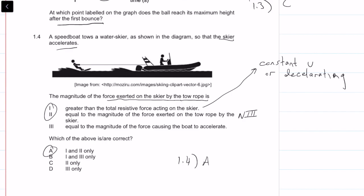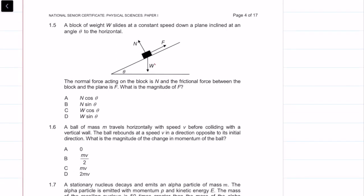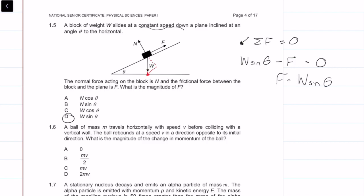Question 1.5: a block of weight W slides at constant speed down an inclined plane at angle theta. Because it's at constant speed, the net force is zero. The component of weight along the incline is W sin θ downward, balanced by friction force F upward. Therefore F equals W sin θ, and the answer is D. Question 1.5 is D.